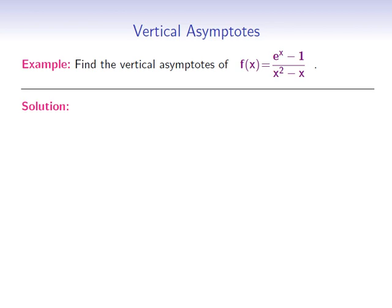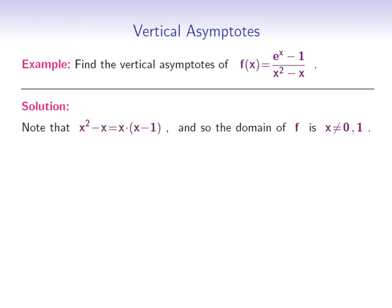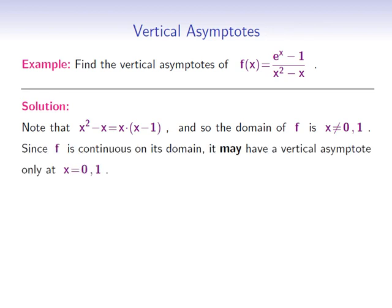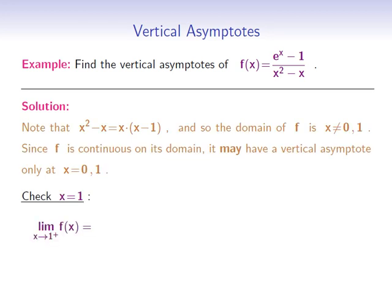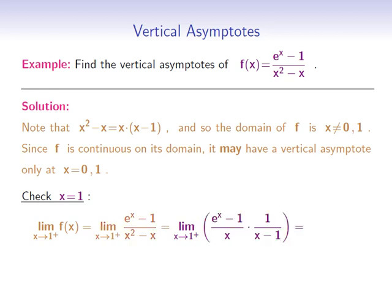Let's begin by finding the domain of this function. Note that x squared minus x can be written as x times x minus 1, and so the domain of f is the set of all numbers except 0 and 1. If x equals 0 or 1, then the denominator becomes 0 and f will be undefined. Since f is continuous on its domain, it may have a vertical asymptote only at x equals 0 or x equals 1. So let's start by checking the right-hand limit of f at 1. This is the limit as x goes to 1 from the right of e to the x minus 1 divided by x squared minus x.